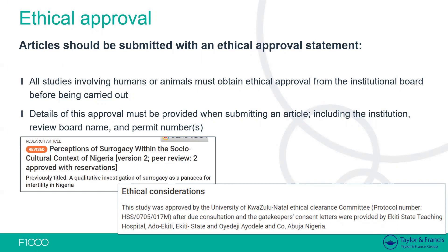For ethical approval, this must come from an institutional review board or another appropriate body, and we would require that to be included in the ethical considerations statement. If your study does not involve any human or animal participants, you don't need to include a statement to that effect. You can see an example of an ethical consideration statement at the bottom — including the institution, the institutional review board, and a protocol number or approval number.